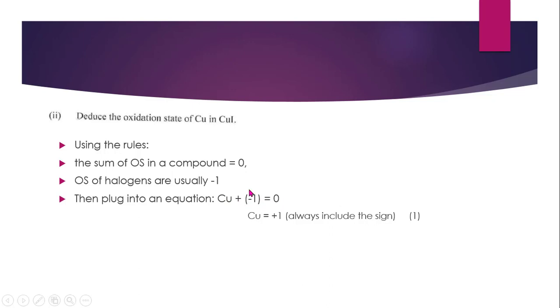When you just transpose, you get copper is equal to plus one. And we always include the sign, especially when it's positive, you always put the positive in front for oxidation states. So this simple statement here is worth one mark.